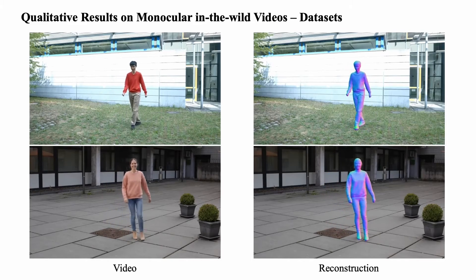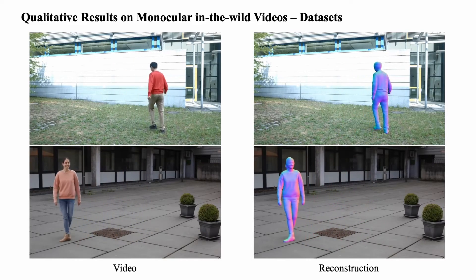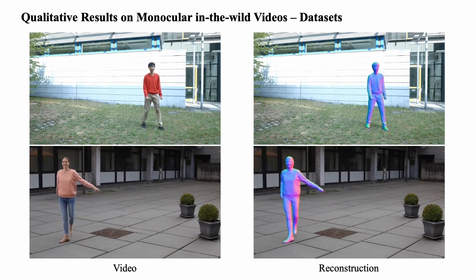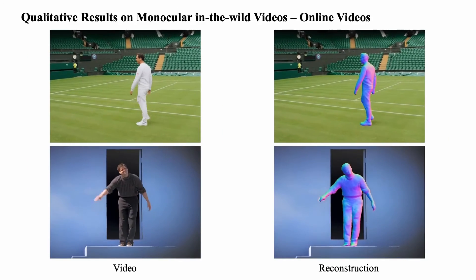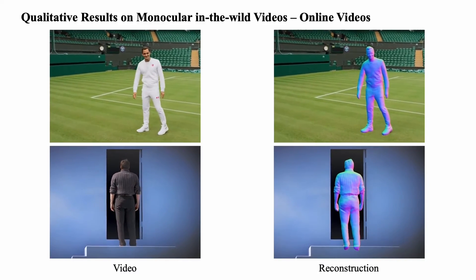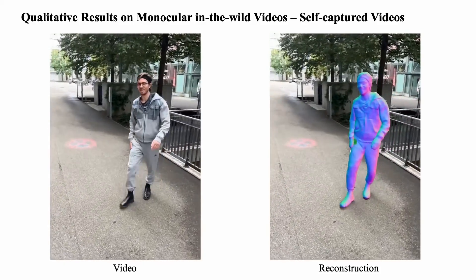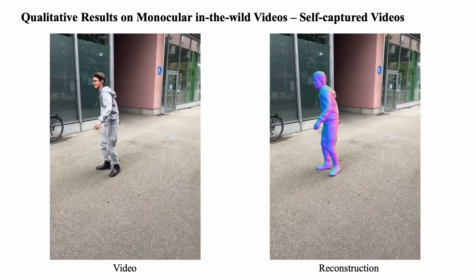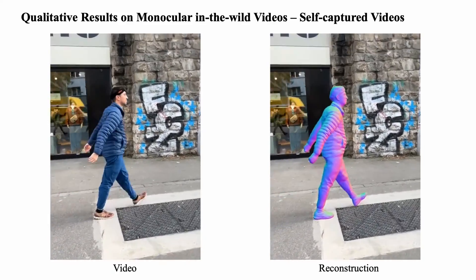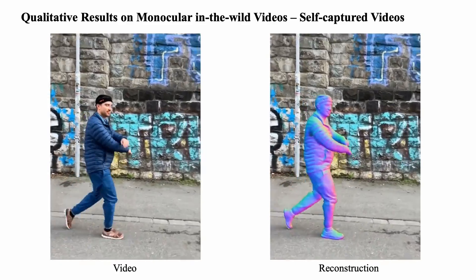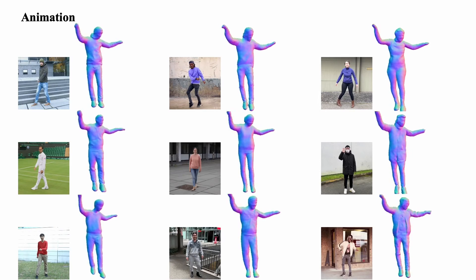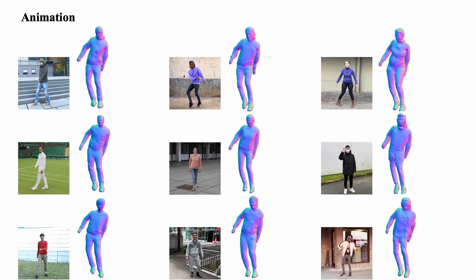Here we show more of our results on in-the-wild monocular videos from different data sources. Our method is applicable to under-constrained online videos and even movie clips. Our method can generalize to different human shapes, garment styles and facial features, even under challenging poses and complicated environments, without requiring external 2D segmentation modules. The reconstructed 3D avatars can also be animated using novel pose sequences.